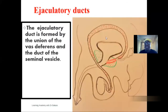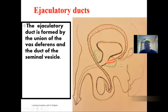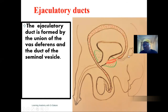The ejaculatory duct is formed by the union of the vas deferens and the duct of the seminal vesicle. The vas deferens unites with the duct of the seminal vesicle to form the ejaculatory duct.